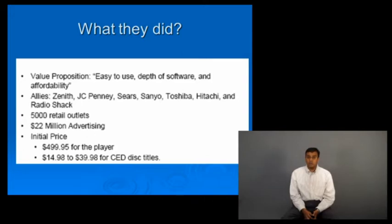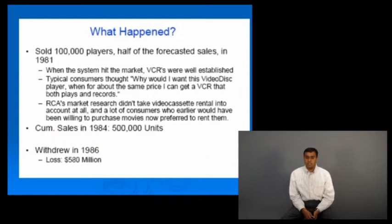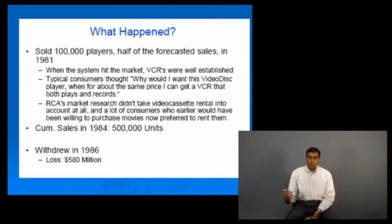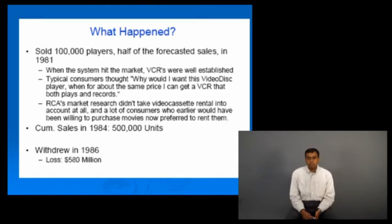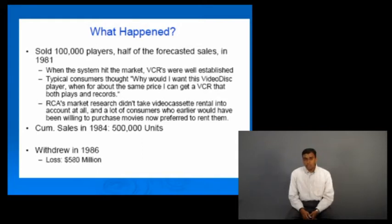Here's what happened. They sold about 100,000 units because of their $22 million advertising blitz — about half of their forecast. VCRs, a slightly cheaper technology, had already taken off by then. Typical consumers thought, 'Why would I want this video disc player when I could get a VCR that both records and plays at a cheaper price?' They also didn't address the video rental market in their research. Cumulative sales by 1984 were 500,000 units — much less than the 16 million projected. By 1986 they had lost out, accumulating losses of about $580 million before being pulled out.